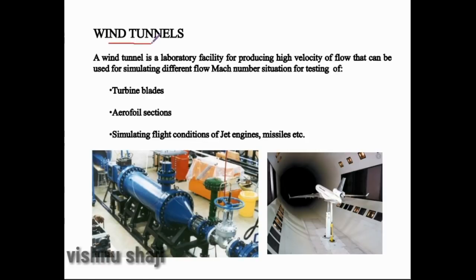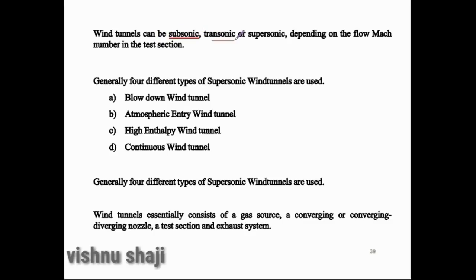Wind tunnels can be subsonic, transonic, or supersonic depending on the flow Mach number in the test section. The test section Mach number is the basis for classifying wind tunnels as subsonic, transonic, or supersonic.